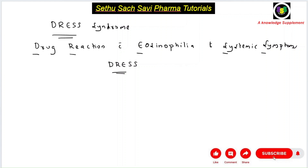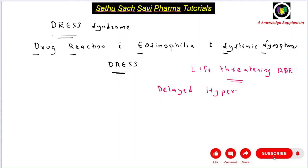DRESS syndrome is basically a life-threatening adverse drug reaction. It is a kind of hypersensitivity reaction — specifically a delayed hypersensitivity reaction. Since it is a delayed allergic reaction, it comes under Type 4 adverse reaction.